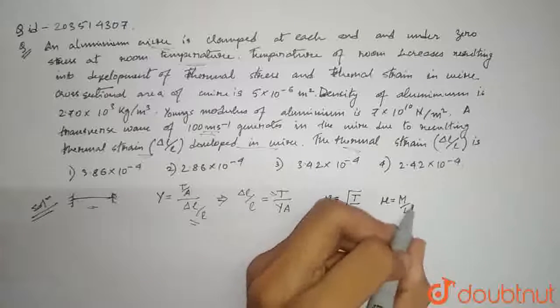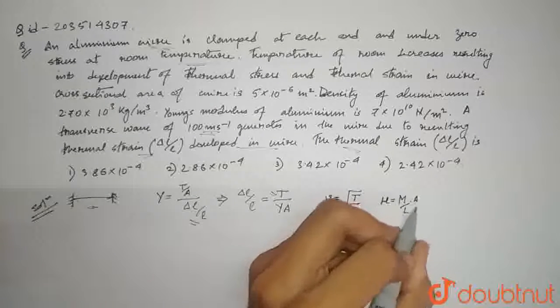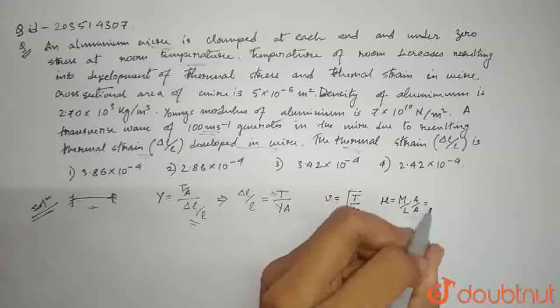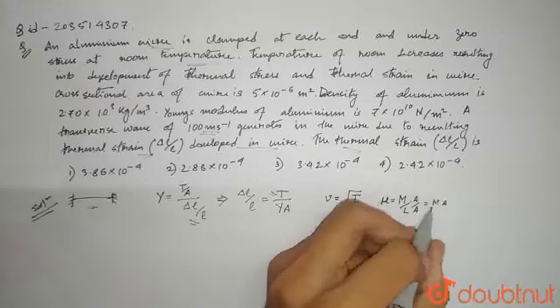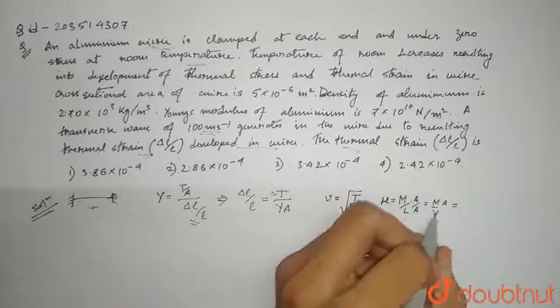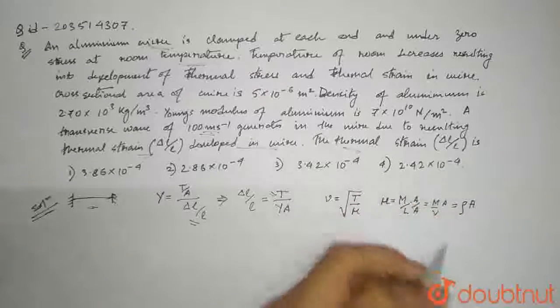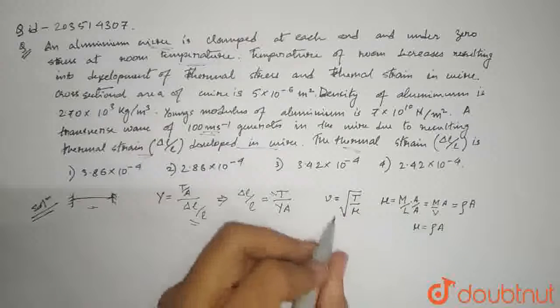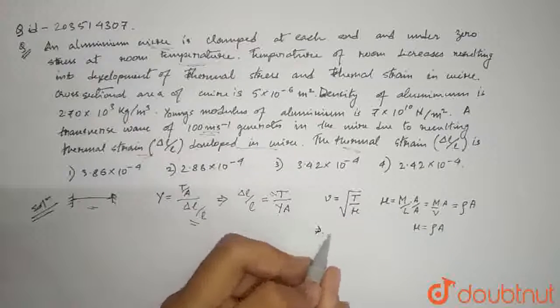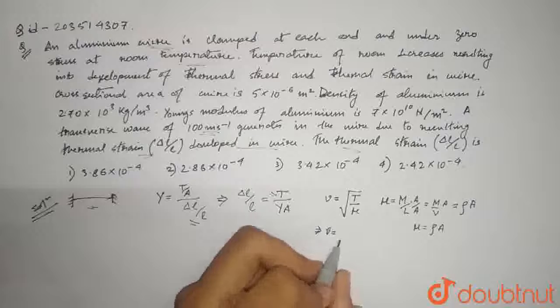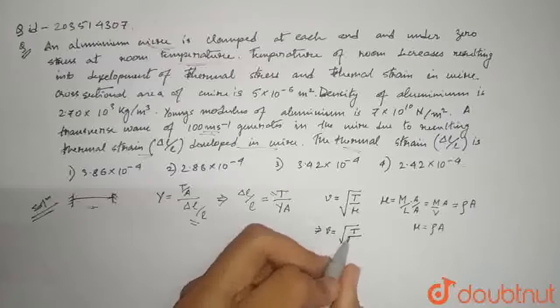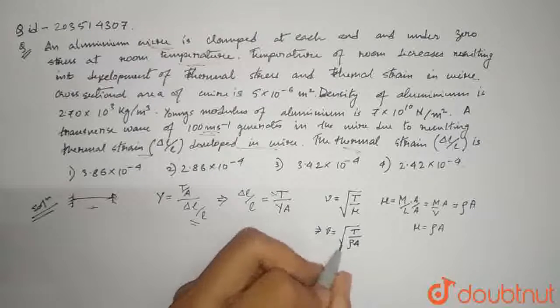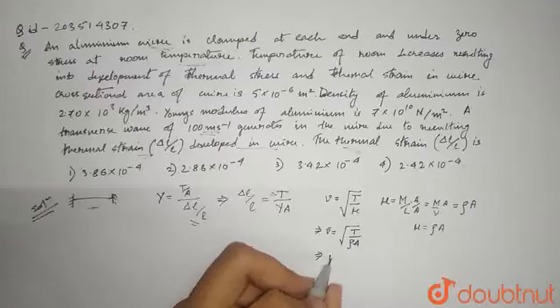How can we write this? M by V is rho into A. Mu is rho into A.